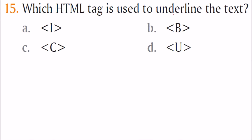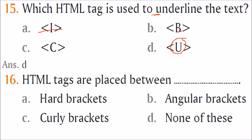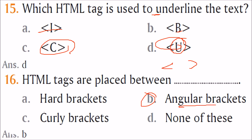Which HTML tag is used to underline the text? U is for underline, B is for bold, I is for italic — the answer is D. HTML tags are placed between angular brackets. The answer is B.